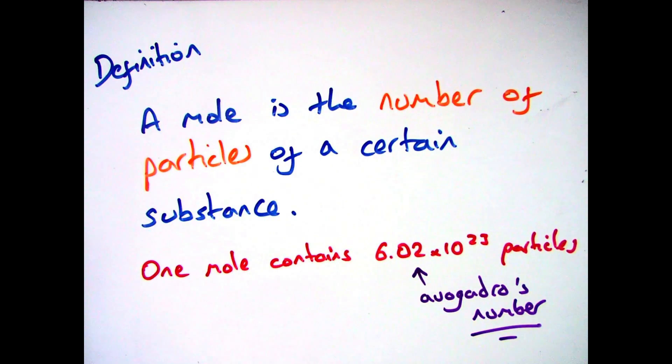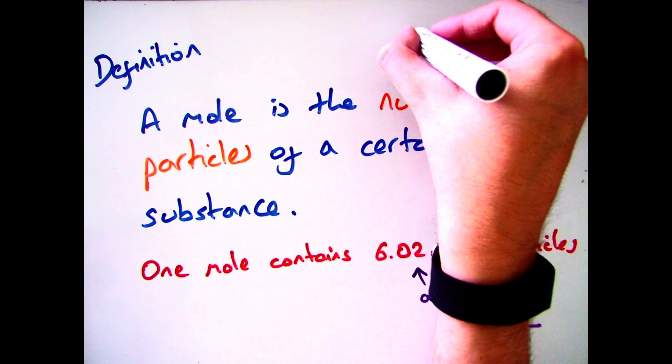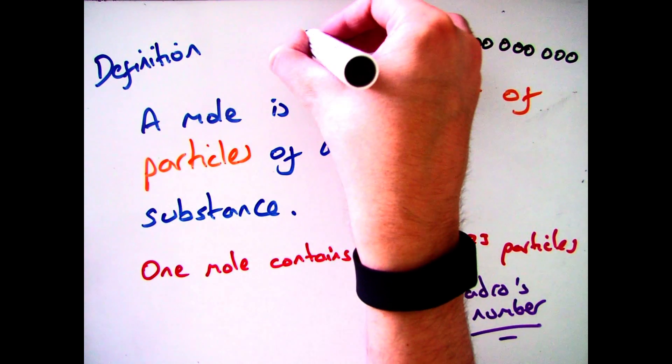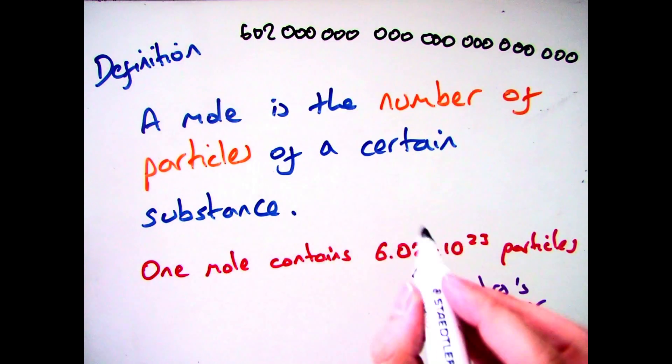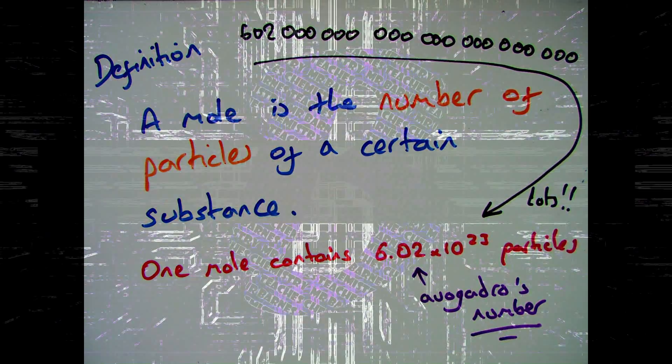Now what that means is if I were to have one mole of sodium for example, I would have 6.02 times 10 to the 23 particles. So that's 6.02 times 10 to the 23 atoms of sodium, which is a lot.